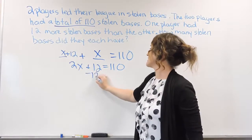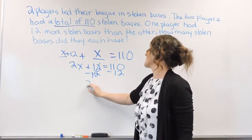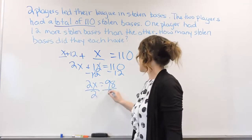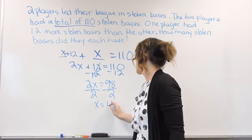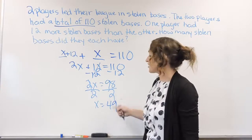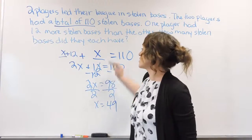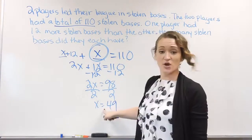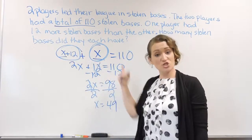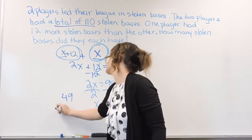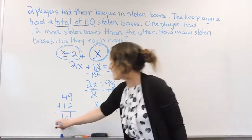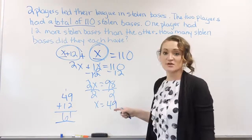Solving for X, we subtract 12 from both sides and get 2X equals 98. Then divide both sides by 2, and X equals 49. So one player had 49 stolen bases — that's the player who represents our X. To find how many stolen bases the other player has, he's just 12 more, so 49 plus 12 gives us 61. One player had 61 stolen bases, the other had 49. See you next time.